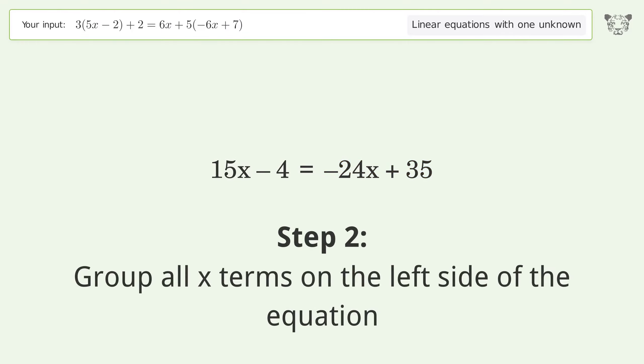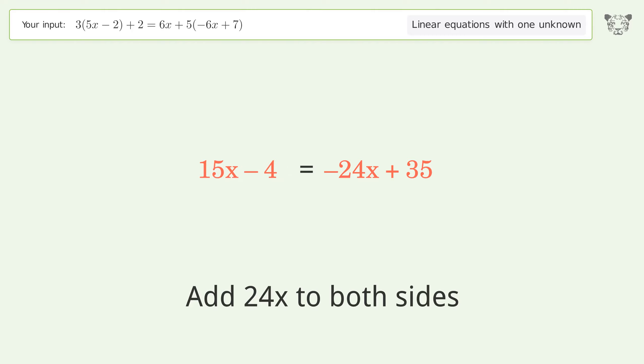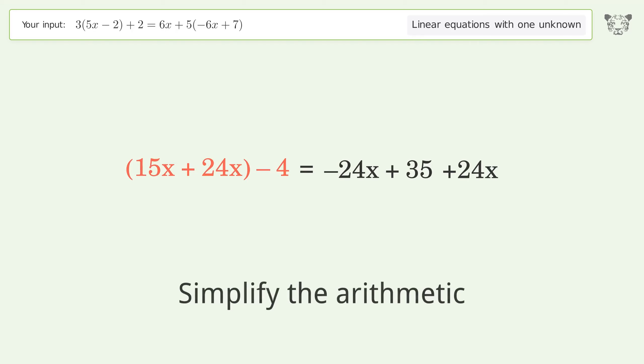Group all x terms on the left side of the equation. Add 24x to both sides. Group like terms, then simplify the arithmetic.